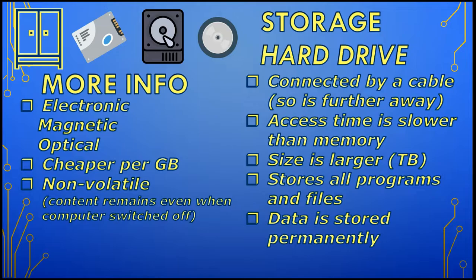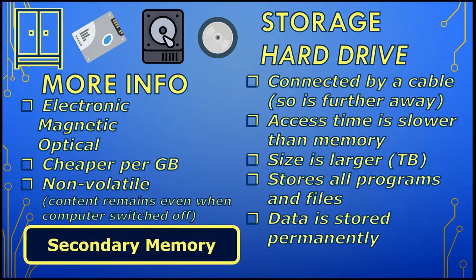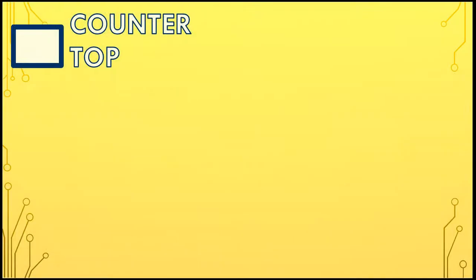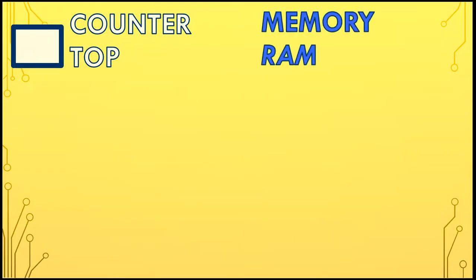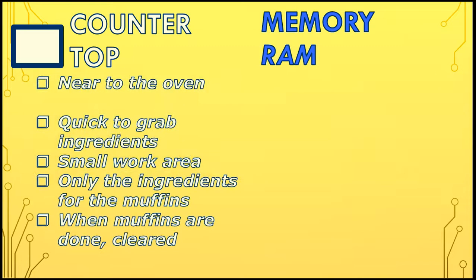Storage is non-volatile — in other words, when the power is gone it still keeps its contents, or remembers what was in storage. We also refer to it as secondary memory. The countertop is the same as memory, or RAM. Memory is the temporary storage of programs and data that is currently being processed by the computer.